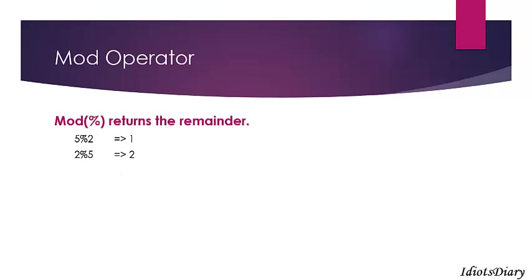In the next example, 2 mod 5 is 2. Suppose you have 2 rupees and want to distribute coins of 5 rupees — you cannot give it to anyone and you have 2 rupees remaining. In the next example, minus 5 mod 2 is minus 1. The sign of the result is the same as the numerator. In the next expression, 5 mod minus 2 is 1. And minus 5 mod minus 2 is minus 1.